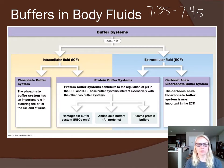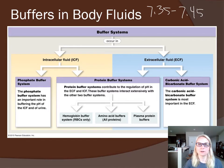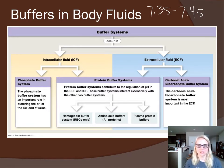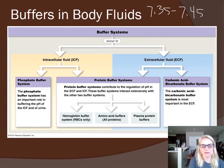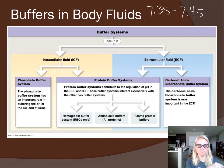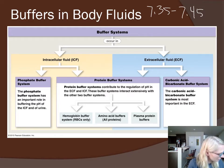This flow chart breaks down our different buffer systems in different compartments. Some are found only in the ICF (inside cells), some only in the ECF (outside cells), and some straddle both compartments. First, for the ICF, we'll talk about the phosphate buffer system — this is a chemical buffer.